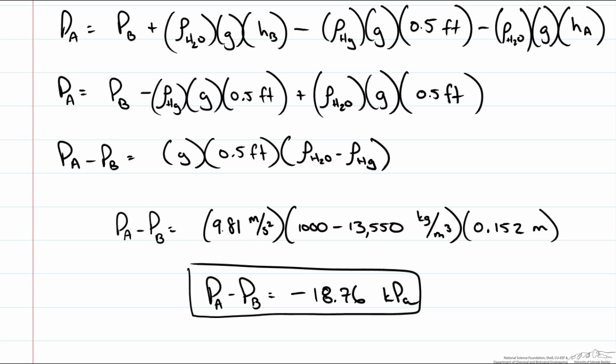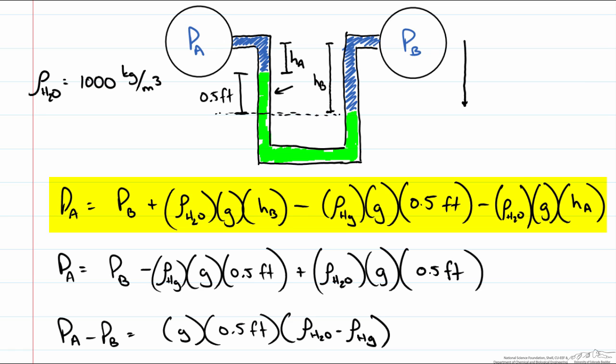However there is one case where this is not the correct answer. If we look at the governing equation we have written out here for our pressure what happens if HA and HB are equal? But we still have a differential column of mercury of 0.5 feet. That would mean that tube B would have to be lower than tube A.